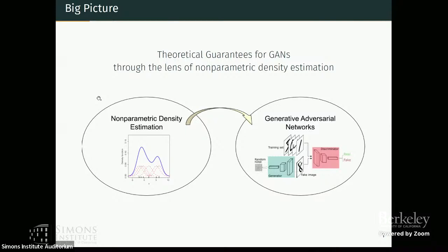We wanted to get guarantees for GANs, and what we ended up having was that we extended the framework of classical nonparametric density estimation to these losses that you get from GAN discriminators, and we ended up generalizing this entire framework of density estimation.